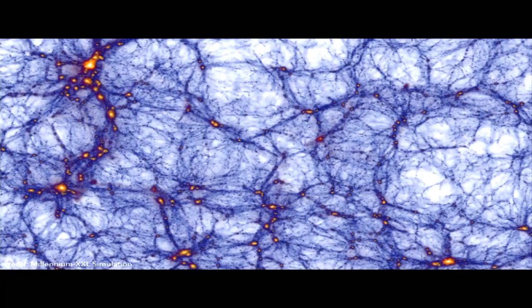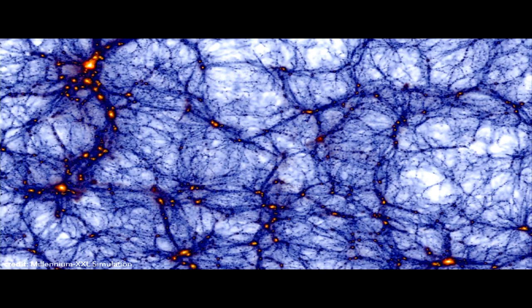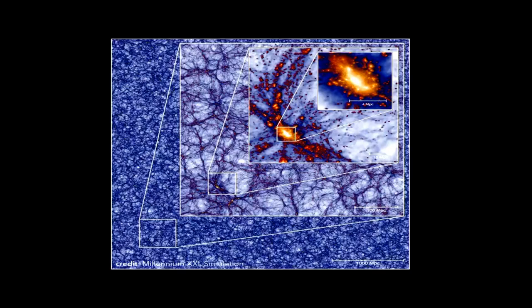If we had a telescope that could magically see all this dark matter, the universe wouldn't look empty. It would look something like this — there is matter pretty much everywhere, in these filaments. This is what we call the cosmic web. You can look at it in more detail on different scales: there's this network of filaments, and at the intersection of these filaments we have regions of higher density, which is where galaxies will ultimately form.